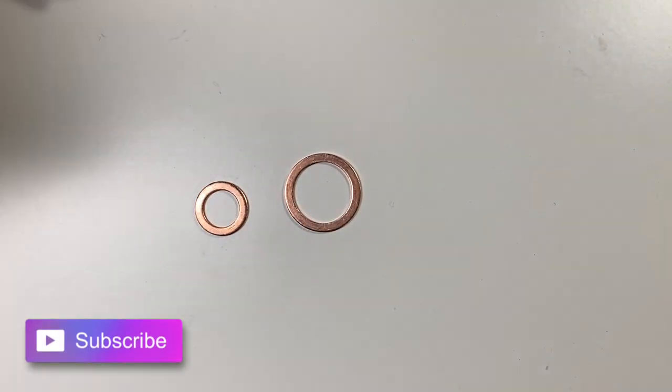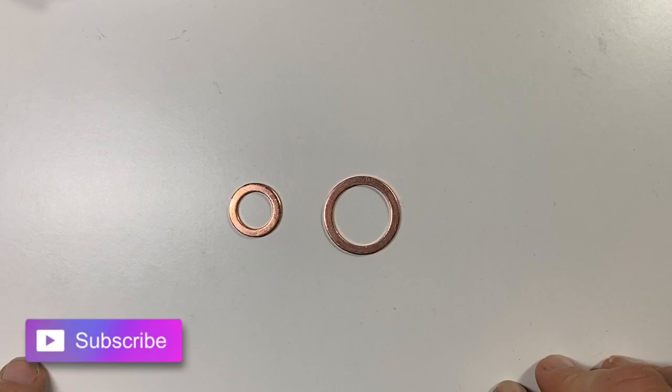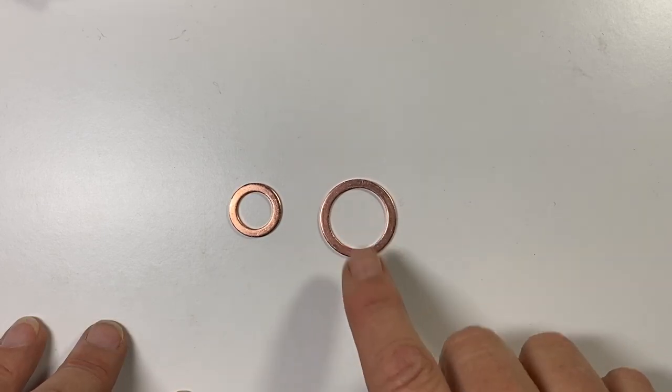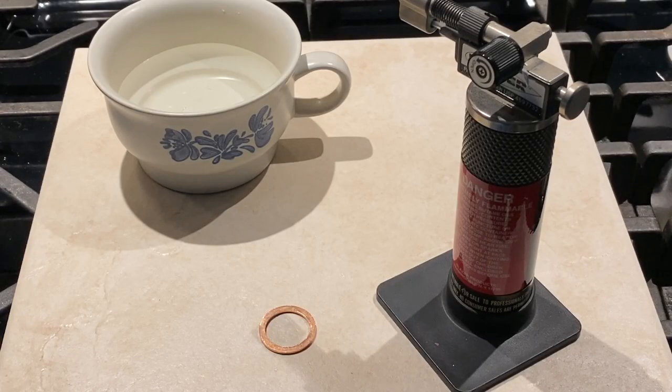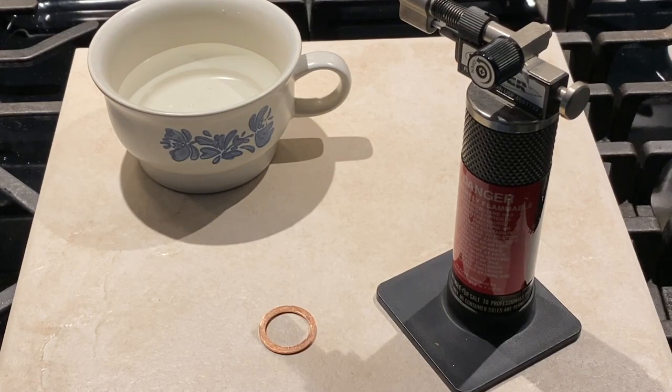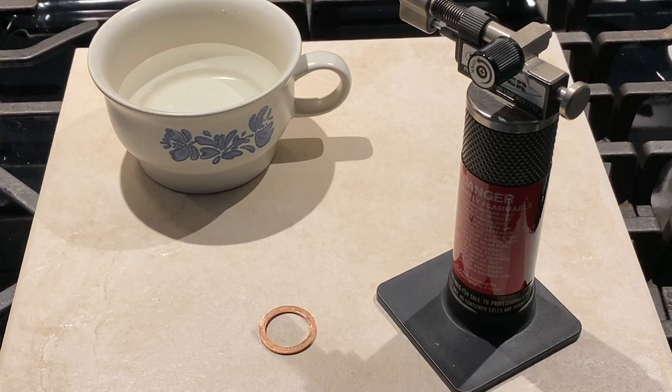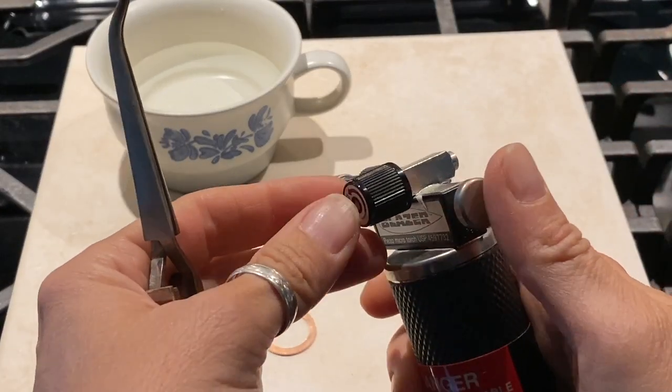To anneal the copper washer, you're going to need a butane torch, so hopefully you have that. Come join me and we'll anneal this copper washer. Okay, so here I am at my stove with my little setup for my torch because I have nowhere else to go. I'm going to do a little experiment here to try to anneal this copper washer so I can manipulate it and shape it into a little clasp. Let's see if this works. I'm going to turn on my torch.